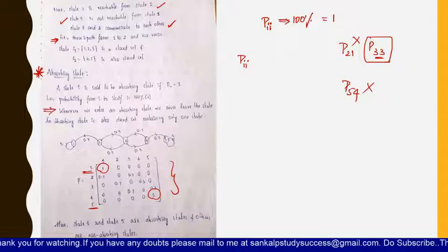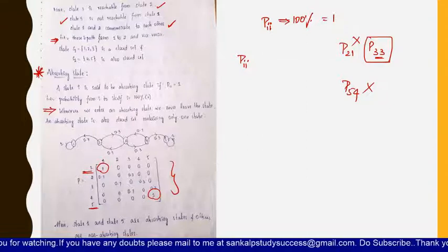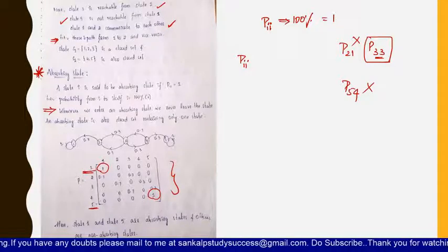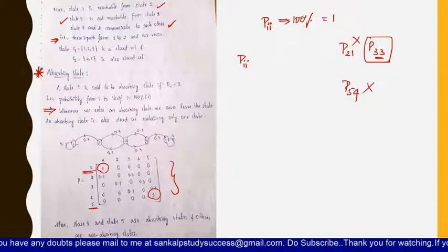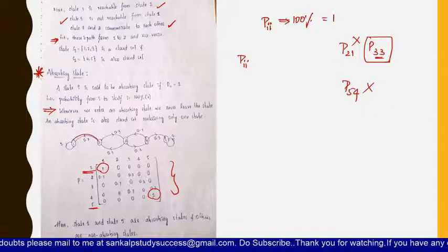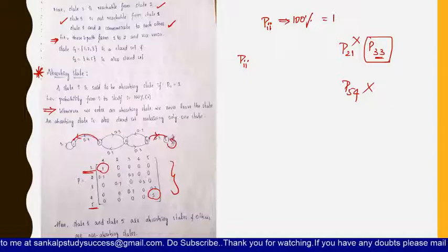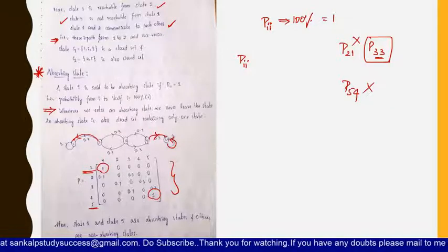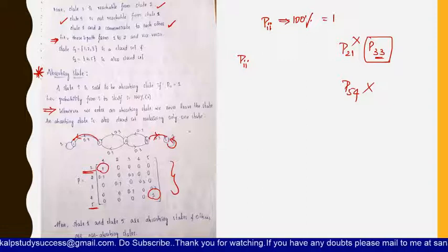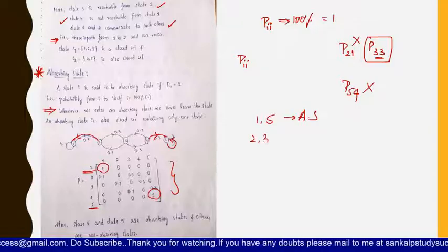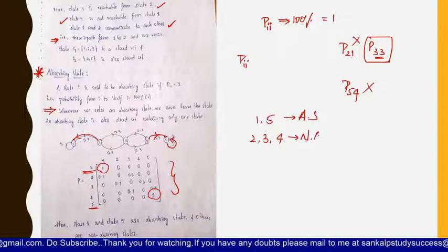Theoretically, whenever we enter an absorbing state we never leave it. From state one we are not going anywhere — from other states we come to one, but we never leave from one. Similarly, we come to five from different states but we never leave from five. So states one and five are absorbing states, and the remaining two, three, and four are non-absorbing states.